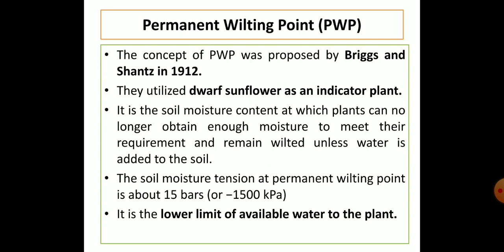Now, the third constant — permanent wilting point (PWP) — which is very important and can also be asked in examinations. This concept was first given by Briggs and Shantz in 1912, and they utilized dwarf sunflower as the indicator plant. You should know that sunflower is the indicator plant for PWP.